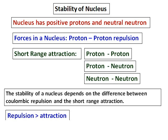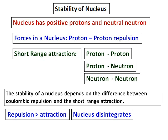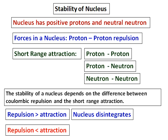If the repulsion is greater than the attraction, the nucleus is unstable and it will disintegrate. But if the repulsion is less than the attraction, nucleus will be stable. Therefore, for all radioactive nuclei, the repulsion is greater than attraction. That is the reason they are radioactive or they break up into other stable elements.